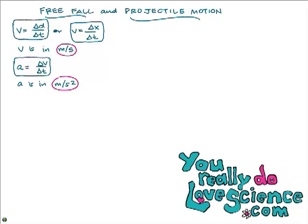You should be comfortable with the equations written so far: velocity equals distance over time, or velocity is change in position over change in time, and velocity is in meters per second. Acceleration is change in velocity over change in time, and that's measured in meters per second squared.